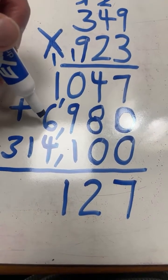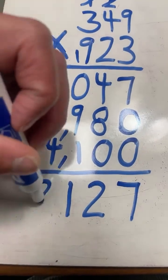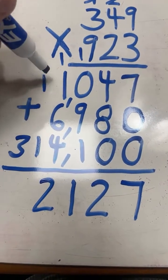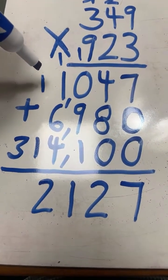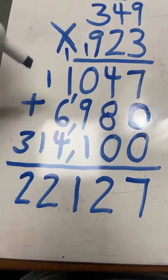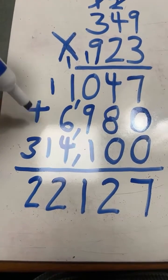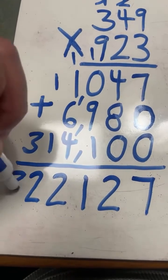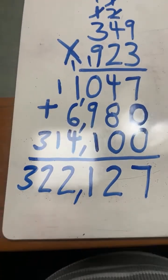1 plus 1 equals 2, plus 6 equals 8, plus 4 equals 12. 2, carry the 1. 1 plus 1 equals 2. 0 plus 0 plus 3 equals 3, and we have our final answer.